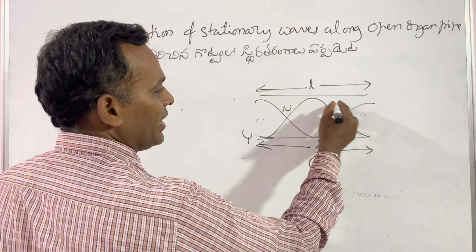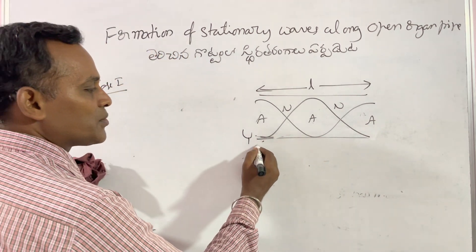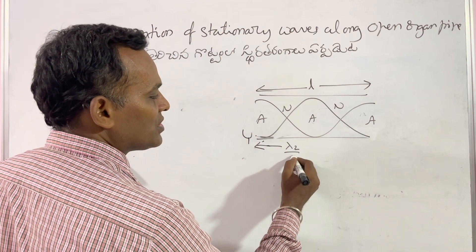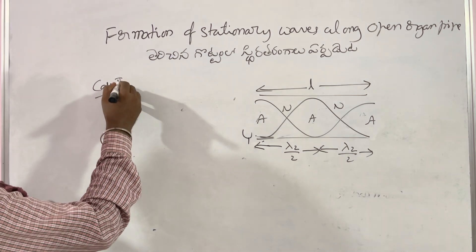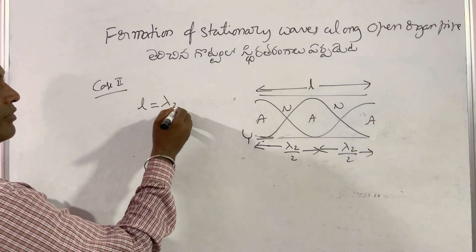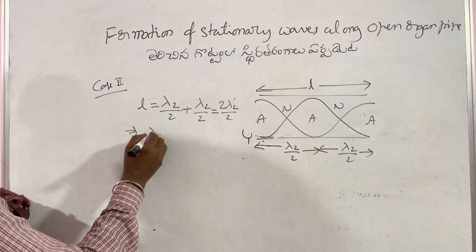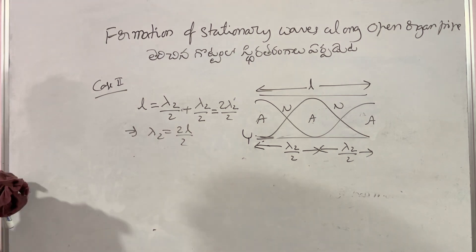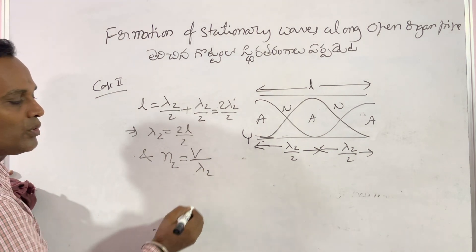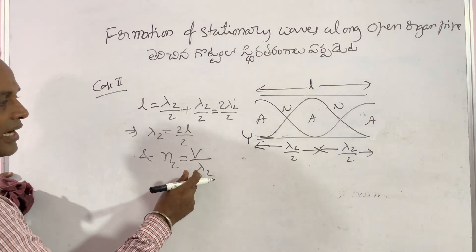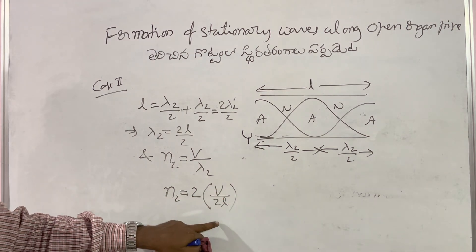In Case 2, the air column vibrates with two nodes and three antinodes. The length of the air column from antinode to antinode contributes λ2/2, and again from antinode to antinode another λ2/2. So the total length L = λ2/2 + λ2/2 = 2λ2/2, which gives λ2 = 2L/2. The frequency n2 = V/λ2.